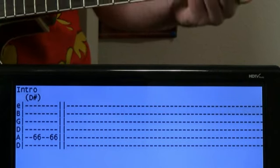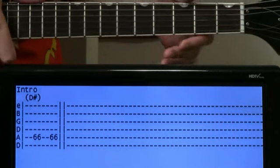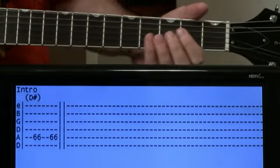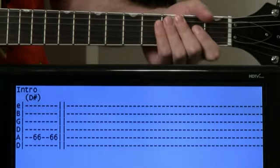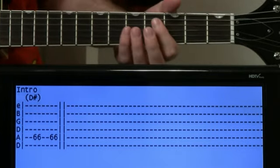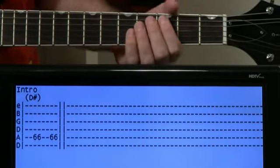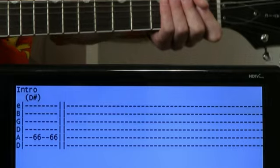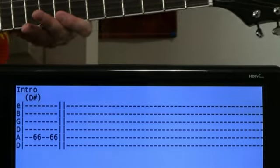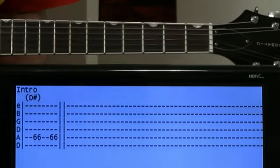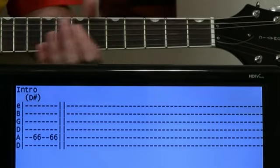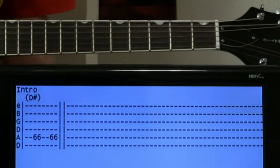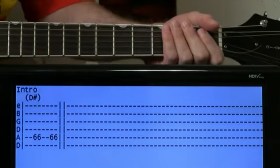Alright, here we have Peter Gabriel's Sledgehammer. Not a super iconic guitar song, but there are some small little funky accent guitar riffs in here, and we can even arrange some of the more iconic horn riffs and synth riffs for the guitar. So you can make it more recognizable. Not a lot of straight up chord strumming and all that, but a little bit towards the end.